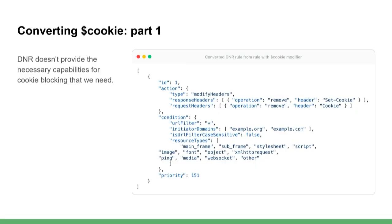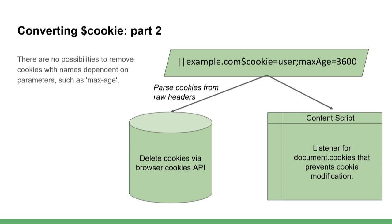Third example: cookie rules. These rules prohibit the setting of cookies. When converting these rules, we encounter a limitation in DNR. Currently, these types of rules are converted in two ways. If a rule doesn't contain any parameters, such as cookie names or expiration times, we can convert it into DNR and remove the entire HTTP header that sets or sends cookies — we can entirely remove the header from the request. But if our rule contains any parameters, we have to use the browser cookies API to manually delete those cookies. In addition, in both cases from the content script side, we ensure that no client code can modify cookies via the document cookies API.